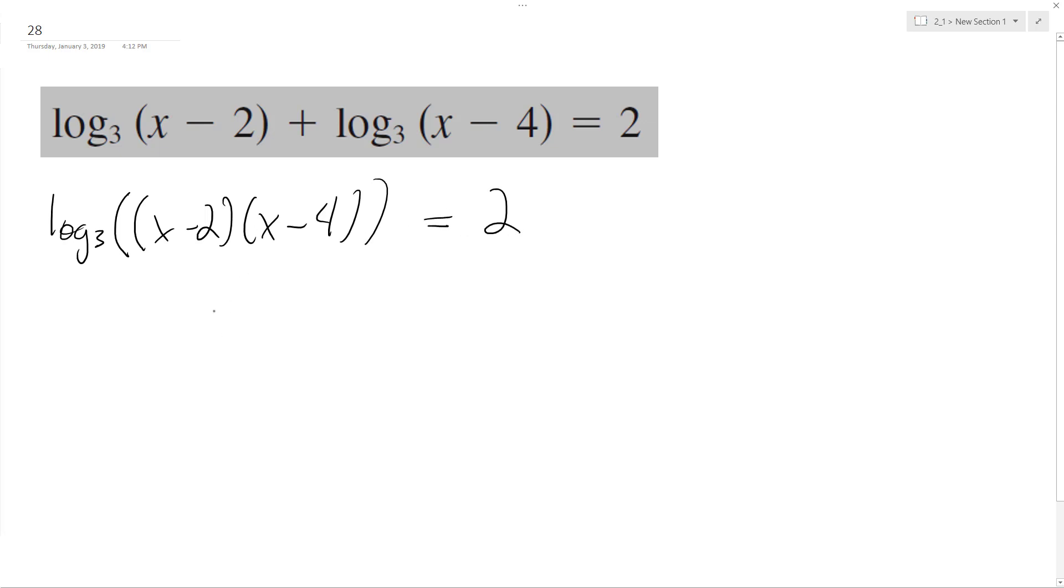And then what we're going to have here is combine the log base 3, so I end up with x squared minus 4x minus 6x, or minus 4x minus 2x, I'm foiling right now and I combine those, plus 8 equals 2.